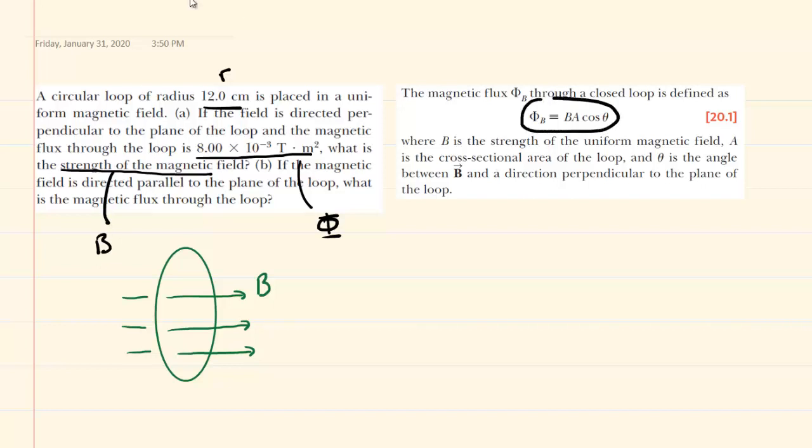We have it right over here. We have the magnetic flux is equal to the magnetic field multiplied by the area of the loop and then multiplied by an angle. Let's talk about that angle for just a moment. It's important to understand that the angle will be between the magnetic field which we have drawn pointing to the right in this picture and a direction perpendicular to the plane of the loop.